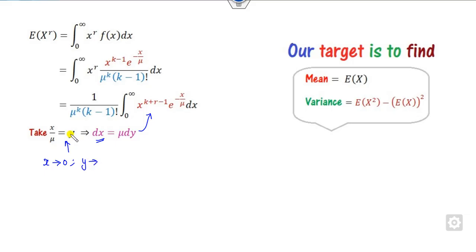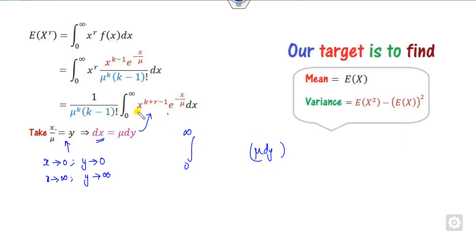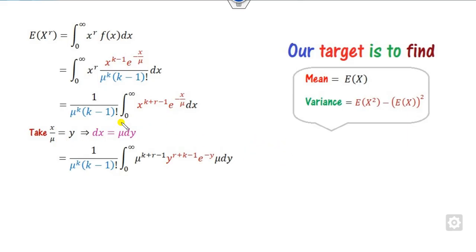When X is 0, Y is 0; when X is infinity, Y is also infinity. So this integration is from 0 to infinity with mu*dY, and I can substitute X as mu*Y here. The first mu combined with the mu from substitution gives mu^(K+R), and the mu^K will be cancelled out, so mu^R is my outside factor.